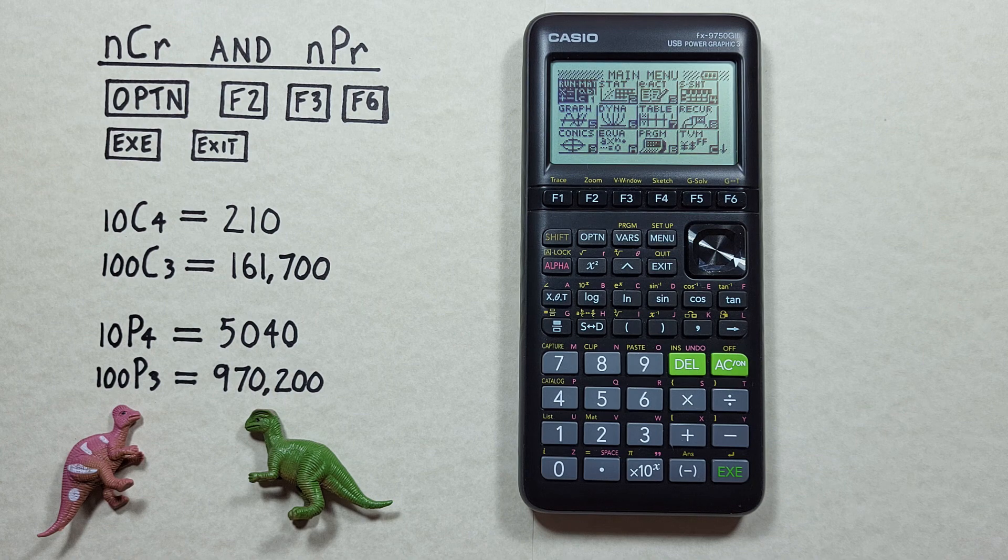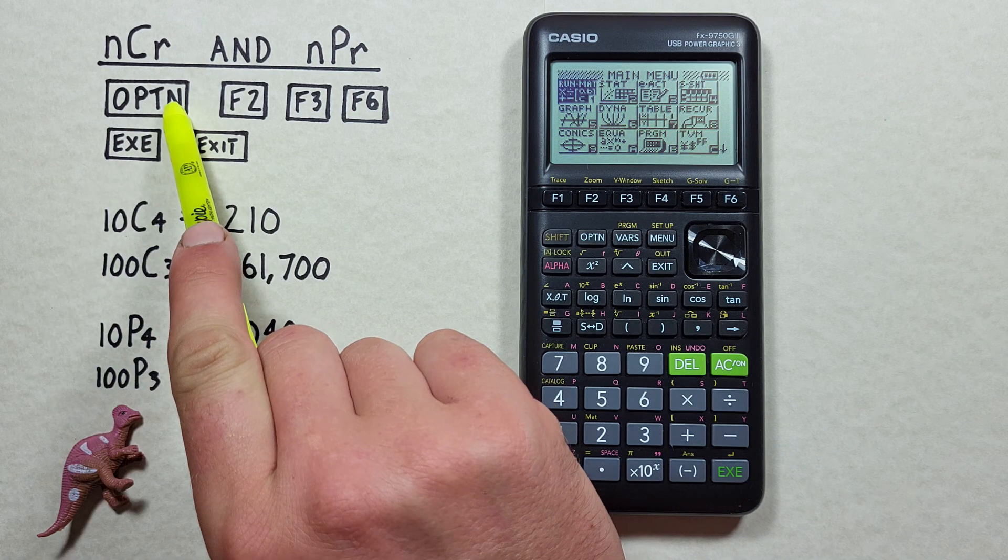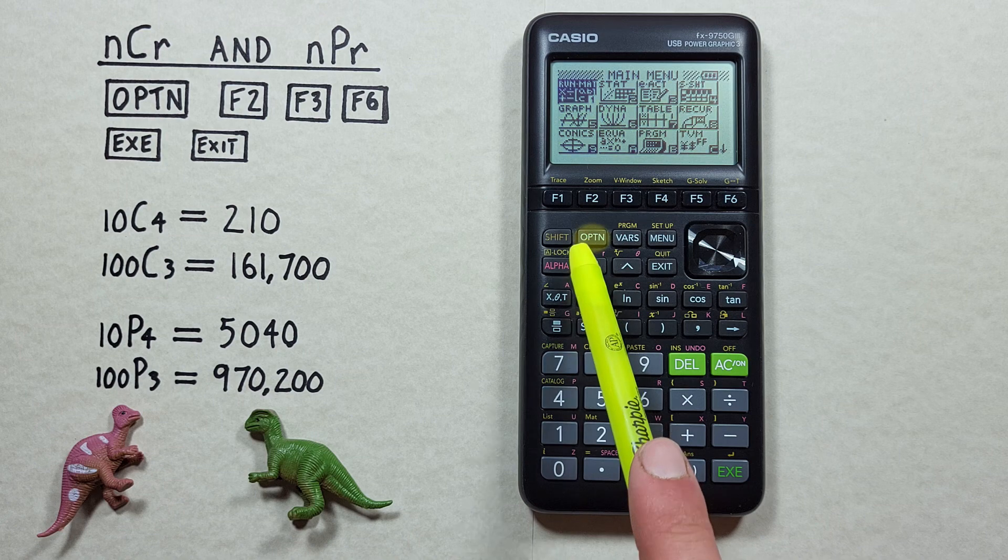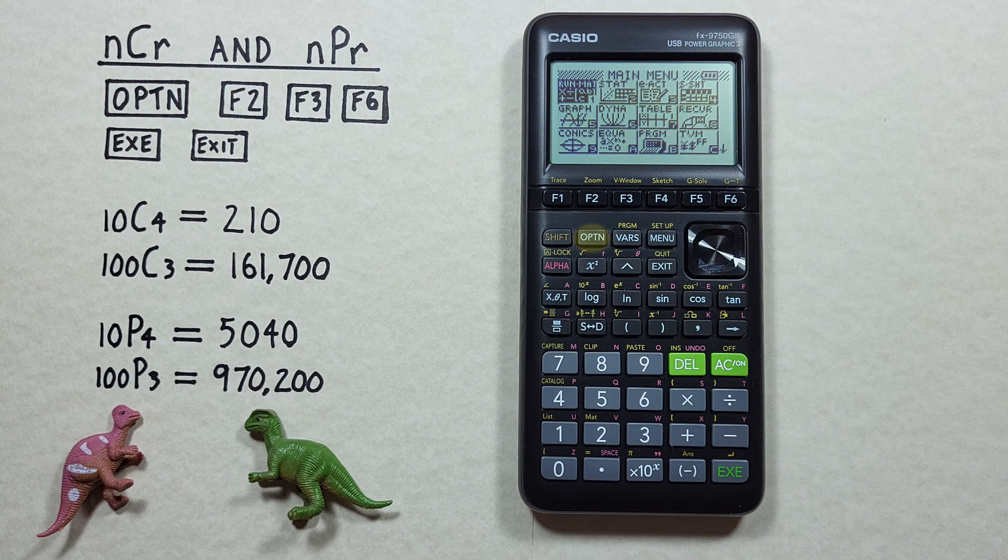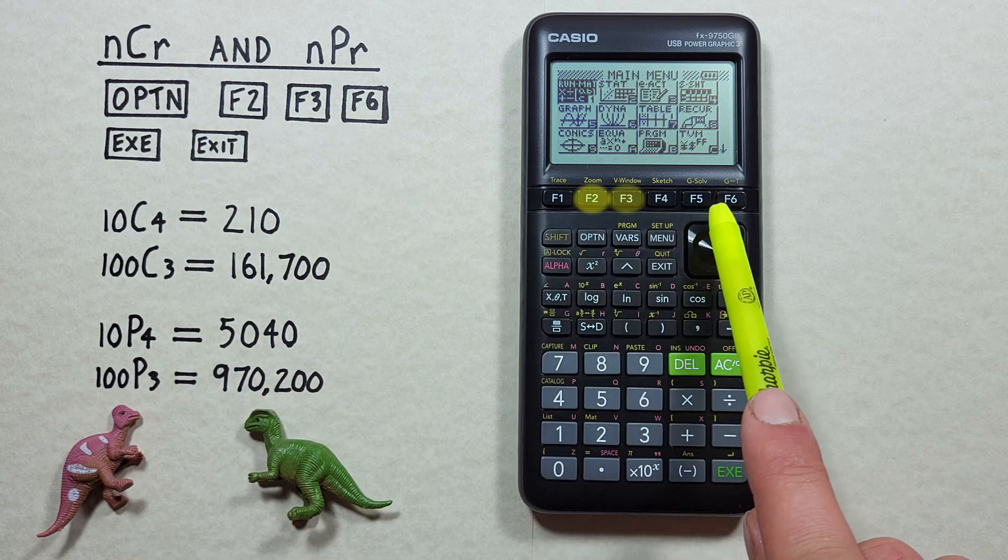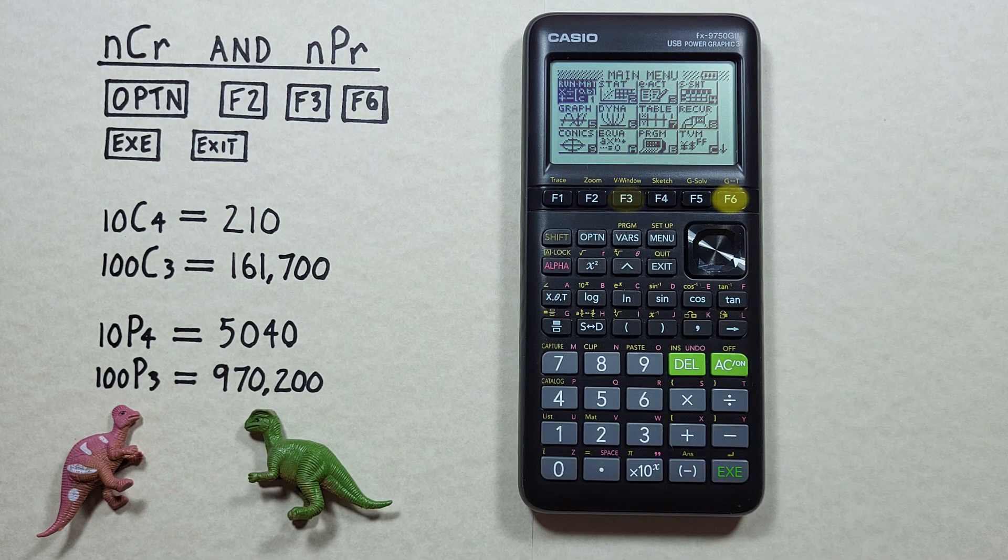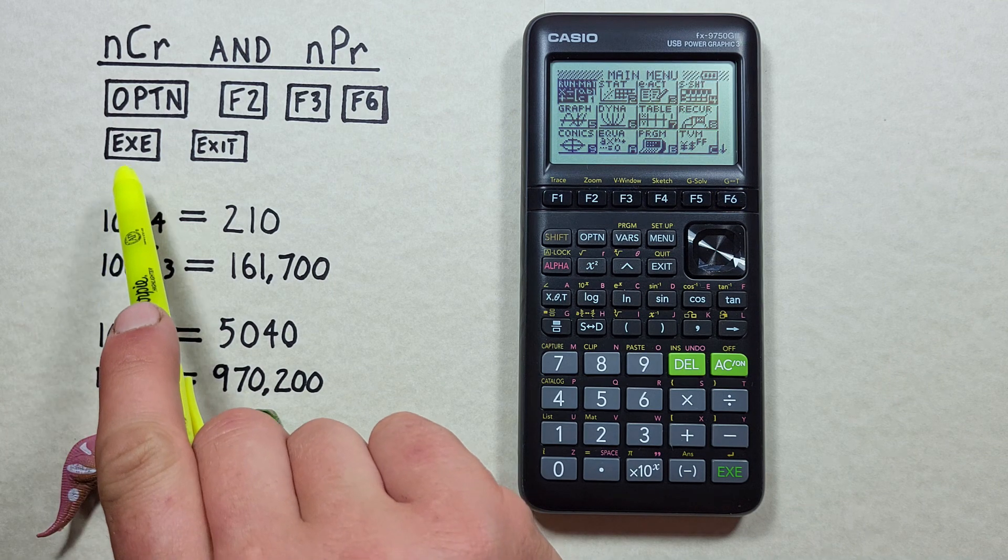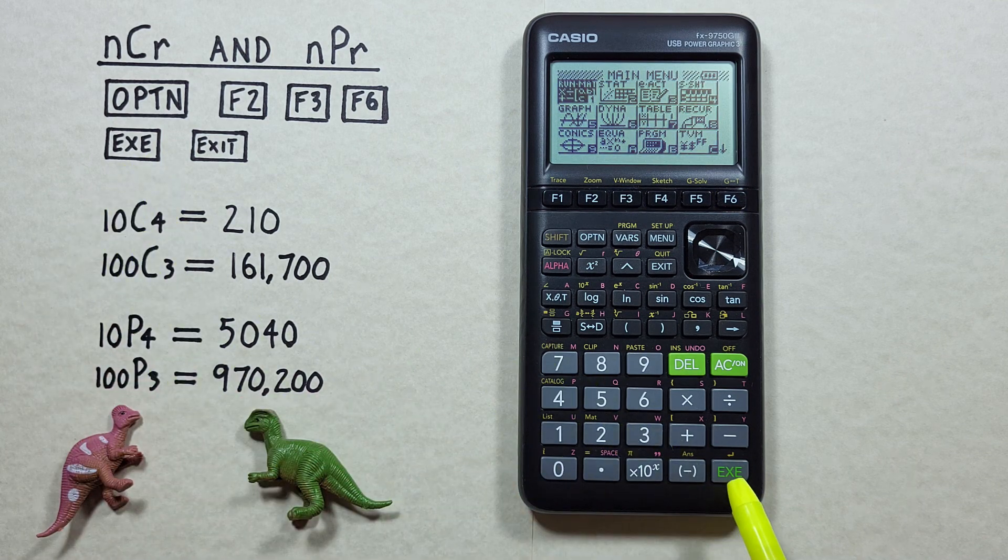To do this, we'll use the Option key that looks like this, located here. The F2, F3, and F6 keys that look like this, located across the top here. The EXE or Execute key that looks like this, located here.